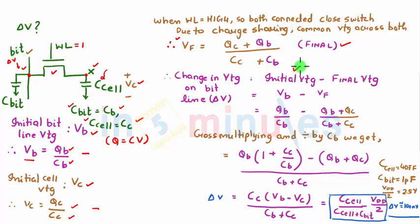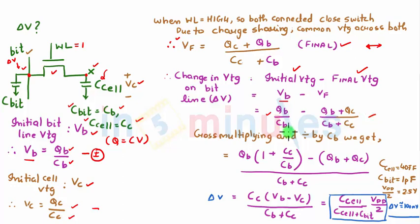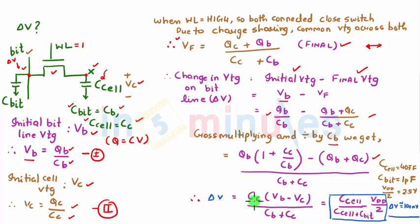Delta V is the initial bit line voltage minus the final voltage. The initial voltage was Q_B / C_B, and the final voltage is (Q_C + Q_B) / (C_C + C_B). After cross-multiplying, dividing by C_B, and substituting equations 1 and 2, we get the final result: delta V = C_cell × (V_B − V_C) / (C_B + C_C).